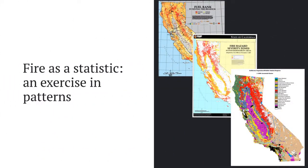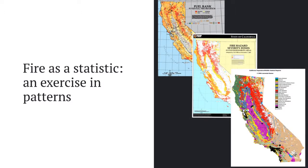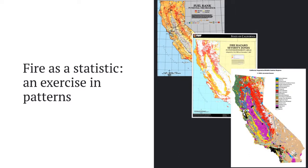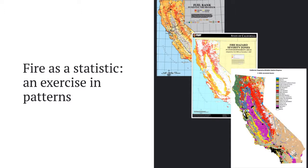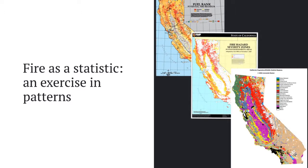Our current understanding of wildfires comes from statistical methods that analyze the pattern of fires in relation to their fire regimes. While these models are good at examining the pattern of fire in relation to fire regime variables such as climate and fuel, they don't necessarily explain the how, why, and when these patterns occur.